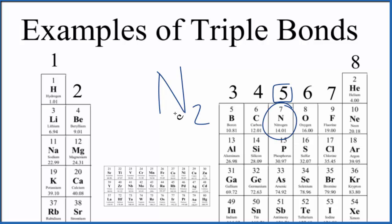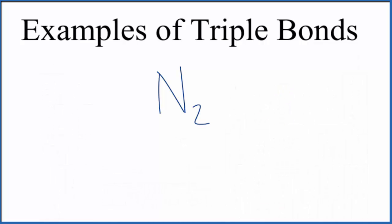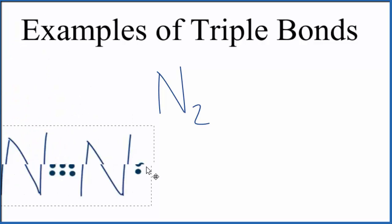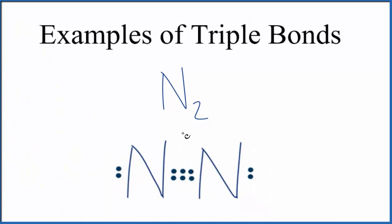Since we have two nitrogens, we're gonna have a total of 10 valence electrons. If we distribute those valence electrons between the nitrogen atoms, the only way that each nitrogen can have eight valence electrons is if they share three pairs of electrons. And that's an example of a triple bond.